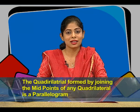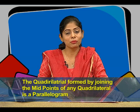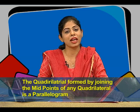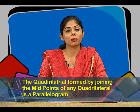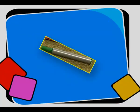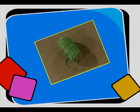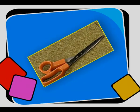Dear students, learning by doing enriches the understanding of mathematical concepts. Today, we are going to perform an activity to verify that by joining the midpoints of the sides of any quadrilateral, we obtain a parallelogram. To do this activity, we need some material like colored chart papers, colored pens, a roll of thread, and a pair of scissors.